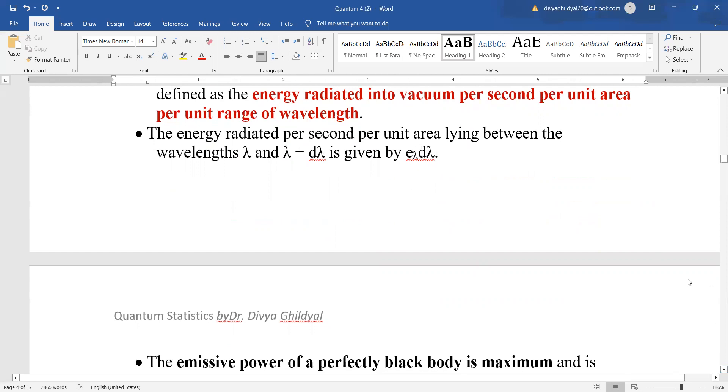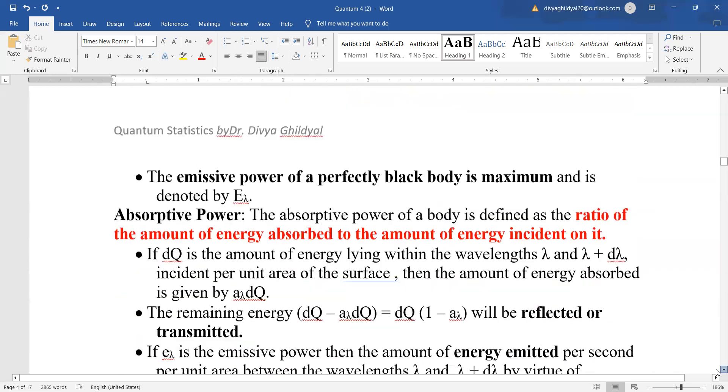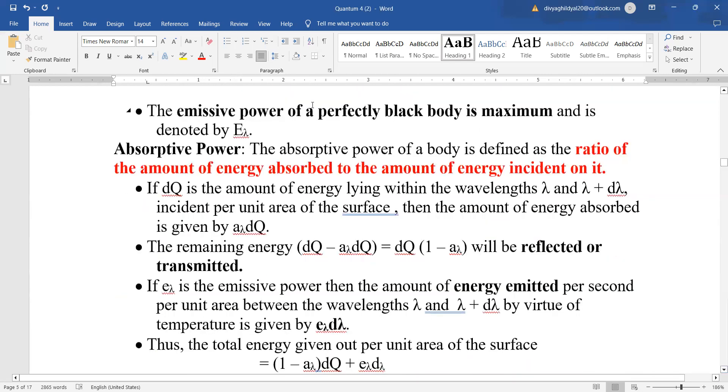Energy will be given by e_λ dλ, and emissive power of a perfectly black body is maximum and it can be denoted by E_λ. Similarly, absorptive power, that means absorbing power, is the ratio of the amount of energy absorbed to the amount of energy incident on it.